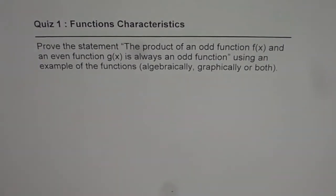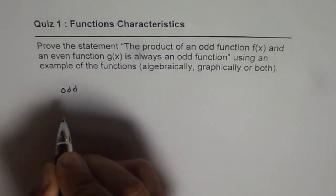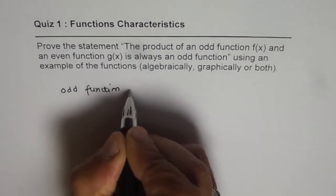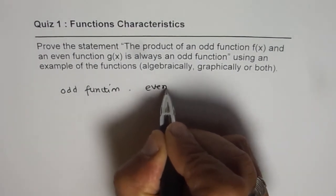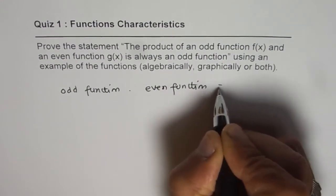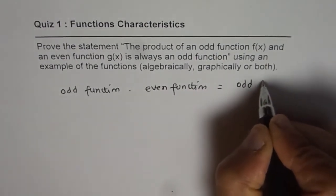So what we need to prove here is that if we have an odd function, and if you multiply that with an even function, then that should be equal to an odd function. This is what we need to prove.